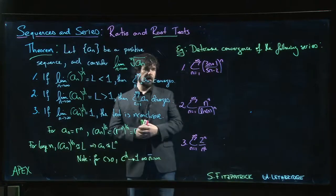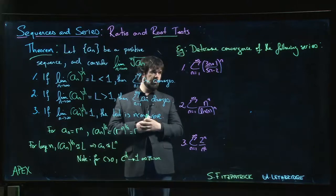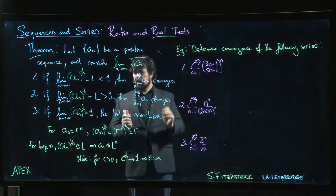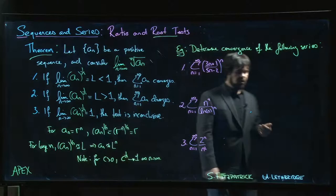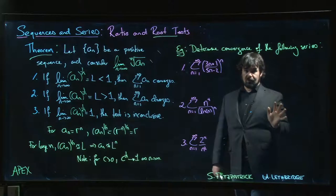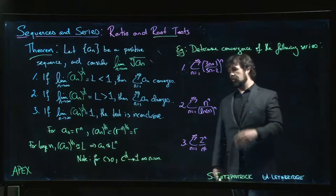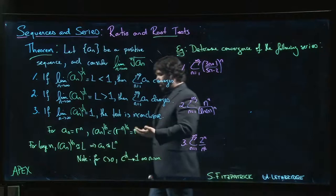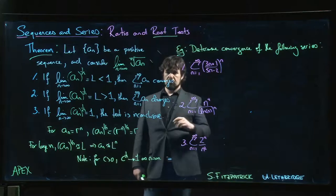All right, so we'll end this section by looking at a few examples that apply the root test to determine convergence. Now one of these you'll probably find as you're working through problems is that you don't use the root test nearly as often as you use the ratio test. Nineteen times out of twenty you probably go for the ratio test over the root test, but there are scenarios where the root test is much more effective.